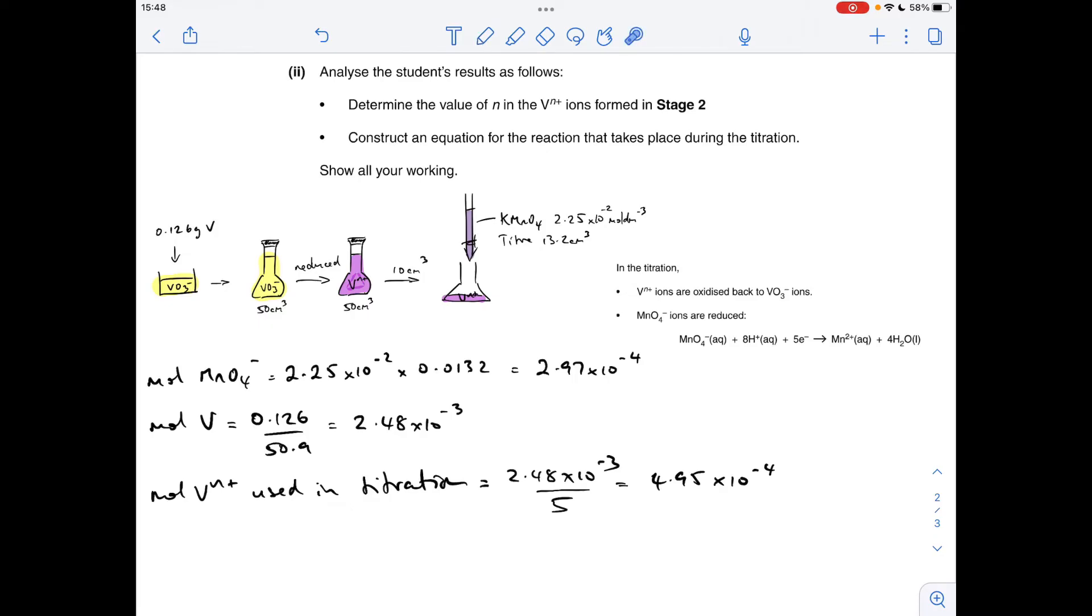So what we can do now is we can establish the mole ratio of MnO₄⁻ to Vⁿ⁺. All we need to do is divide the bigger number by the smaller number. So that gives us a mole ratio of 1 to 1.67 or 3 to 5.